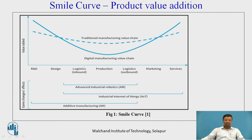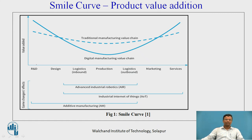The smile curve plays a very important role in additive manufacturing. Additive manufacturing consists of the production system and the design system. With respect to traditional manufacturing, it consists of marketing, services, and the R&D part. In conventional manufacturing, R&D plays a vital role. But in advanced manufacturing processes like additive manufacturing, logistics and design play a very important role, along with the production system.